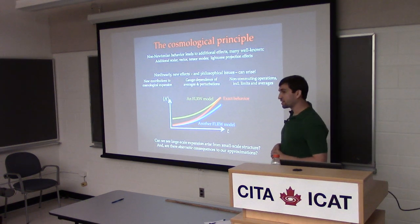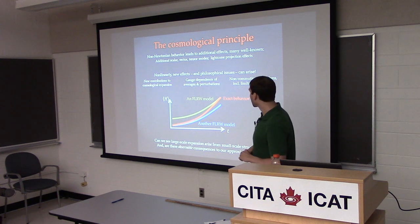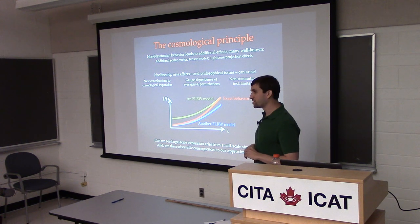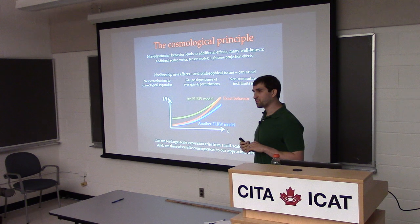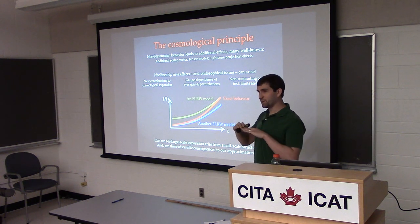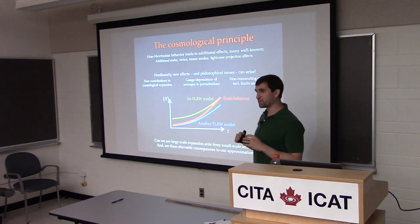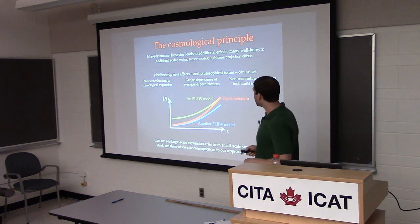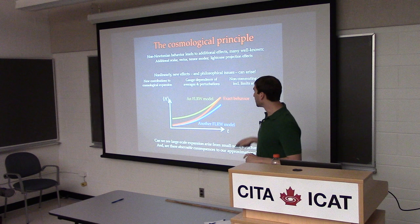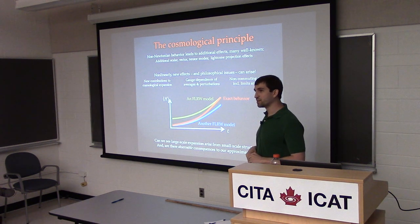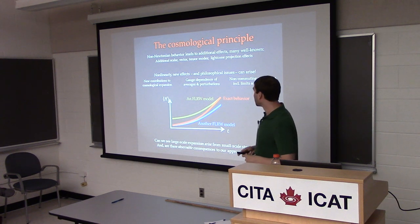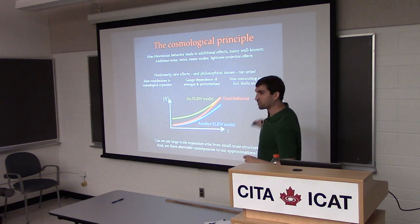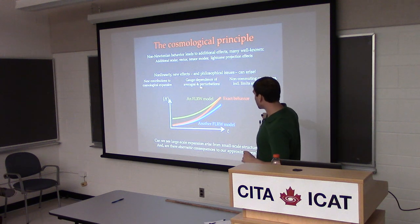We'd like to know how big of a problem this is in nonlinear GR. We also have the gauge dependence of averages and perturbations. I have to say what I mean by average quantities — when I take an average I'm averaging over some spatial foliation. In different coordinate systems, at one foliation it does one thing, in another coordinate system it does another. Does my average expansion rate over these different spatial slices look the same? In general, no — the precise behavior in co-moving synchronous gauge can look different than in Newtonian gauge.